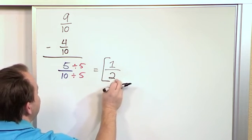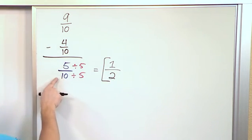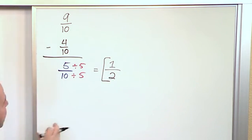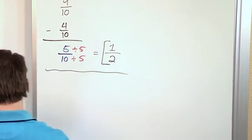This makes sense that 1/2 of a pizza is the same as 5 out of 10 pieces of the pizza. They represent the same thing, they just look a little simpler when you do the simplification like that. So 1/2 is what you would get.